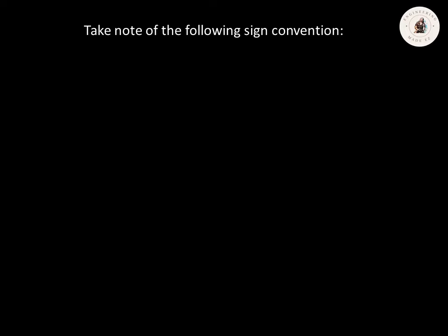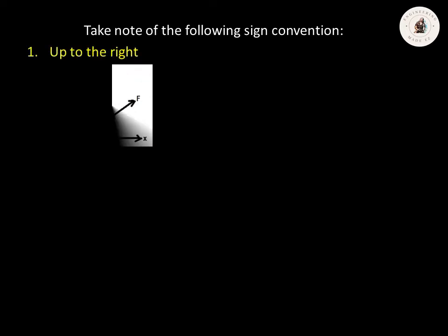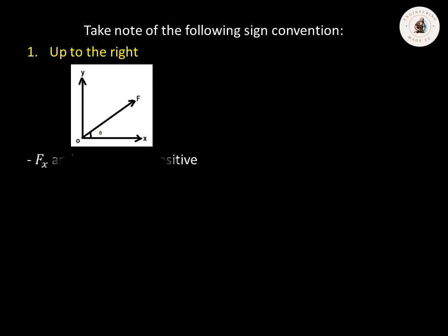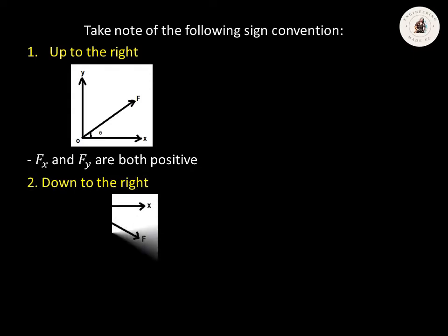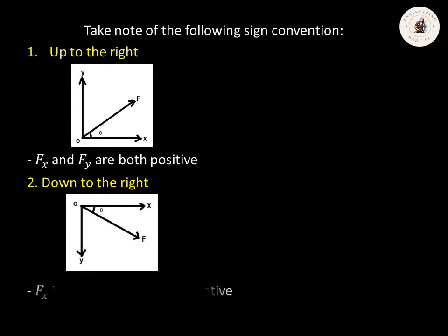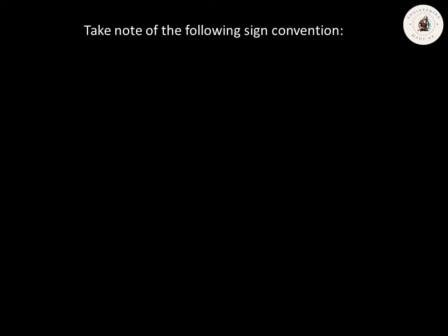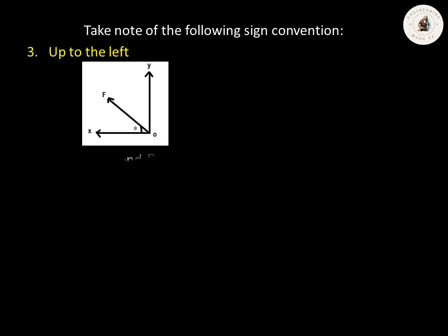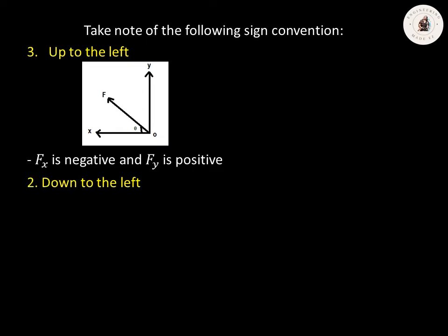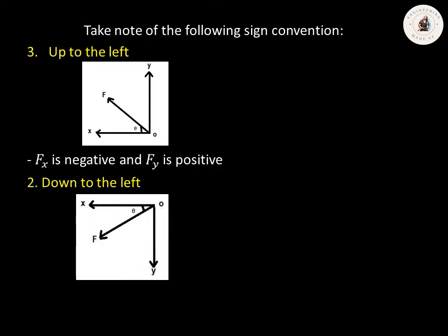In solving the components of a force, we have to take note of the following sign conventions. If our figure is located up to the right, Fx and Fy are both positive. When our figure is located down to the right, Fx is positive while Fy is negative. When the figure is located up to the left, Fx is negative and Fy is positive. When the figure is located down to the left, Fx and Fy are both negative.